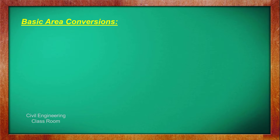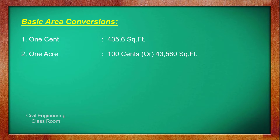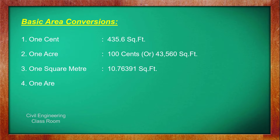Before going into conversion, we need to know a few basic area conversion values. Area of 1 cent = 435.6 square feet. Area of 1 acre = 100 cents or 43,560 square feet. Area of 1 square meter = 10.76391 square feet. Area of 1 are = 100 square meters.